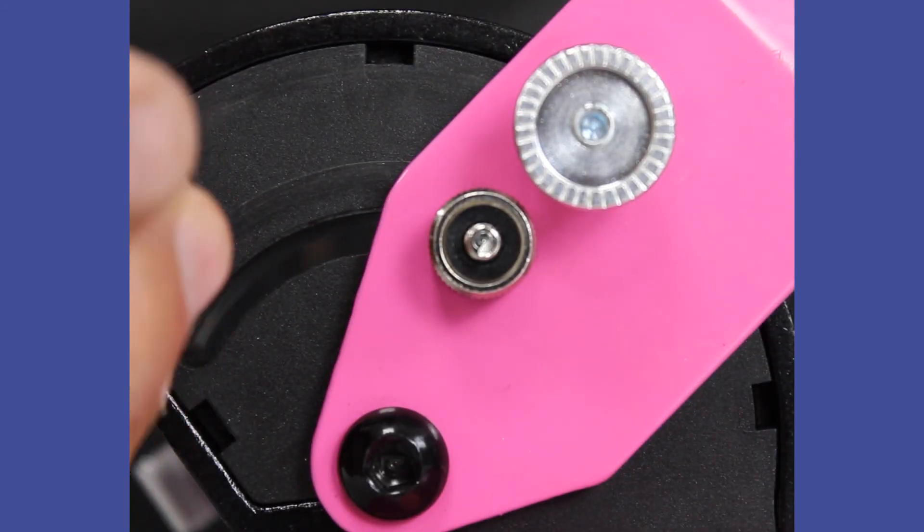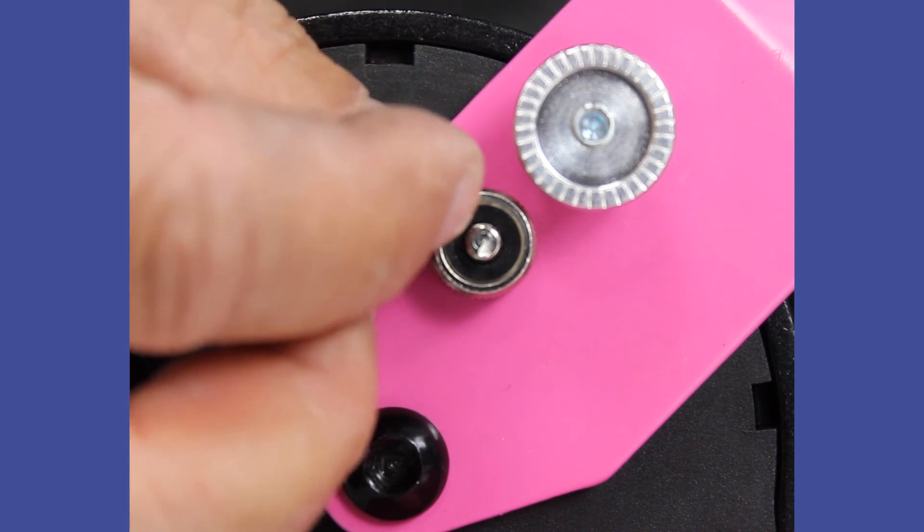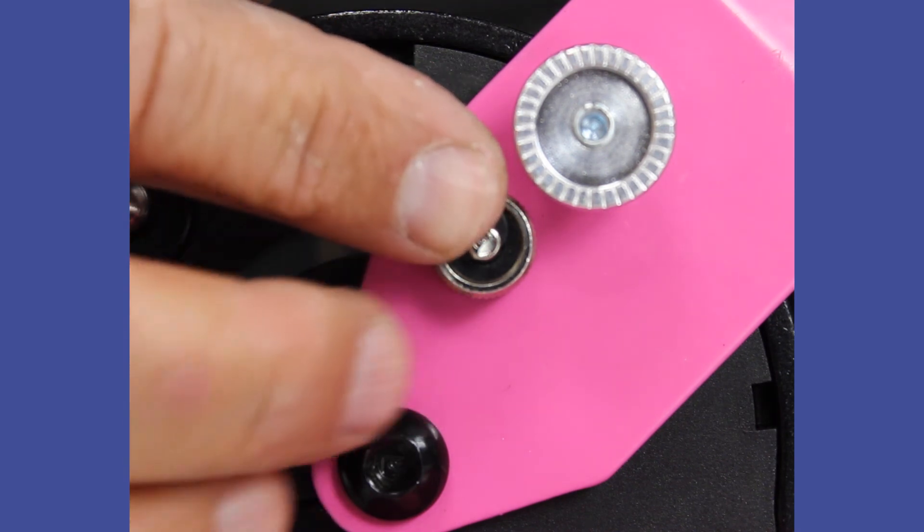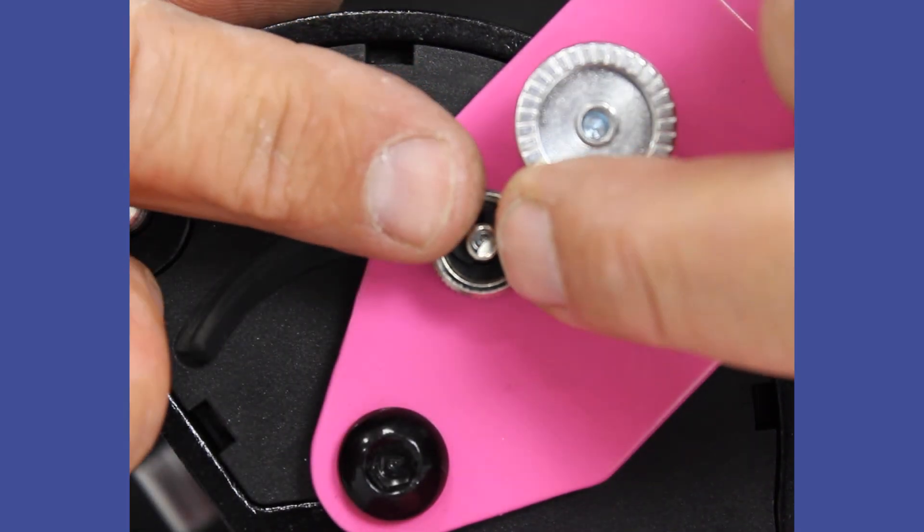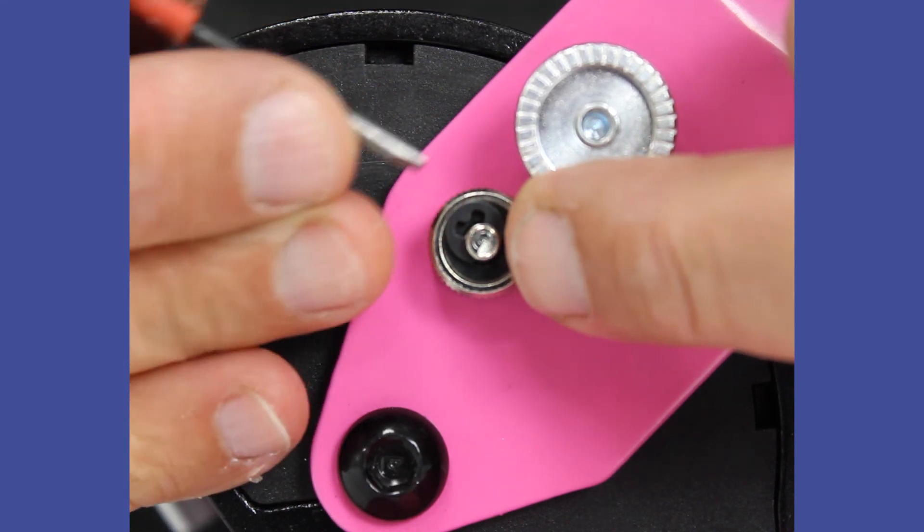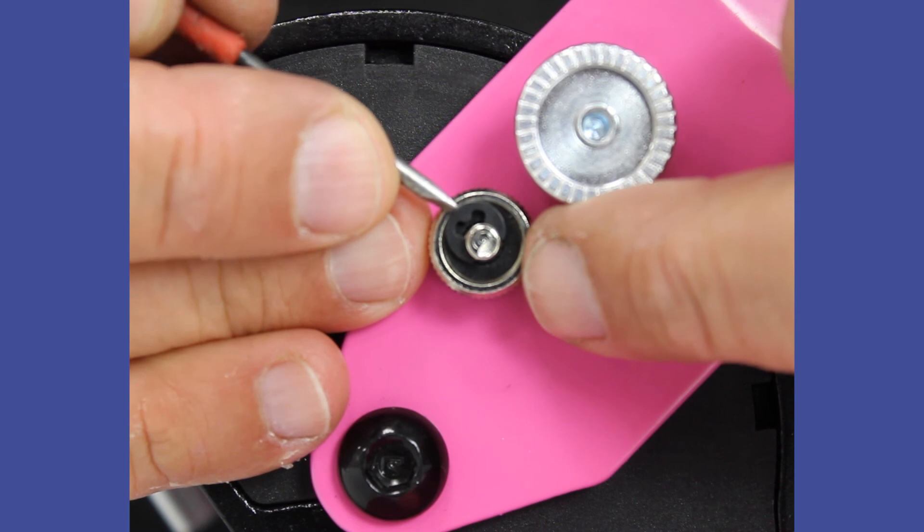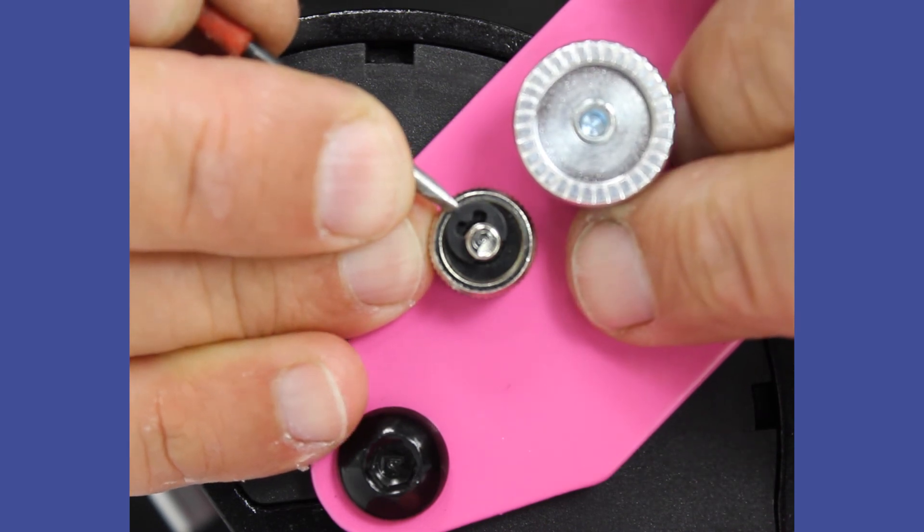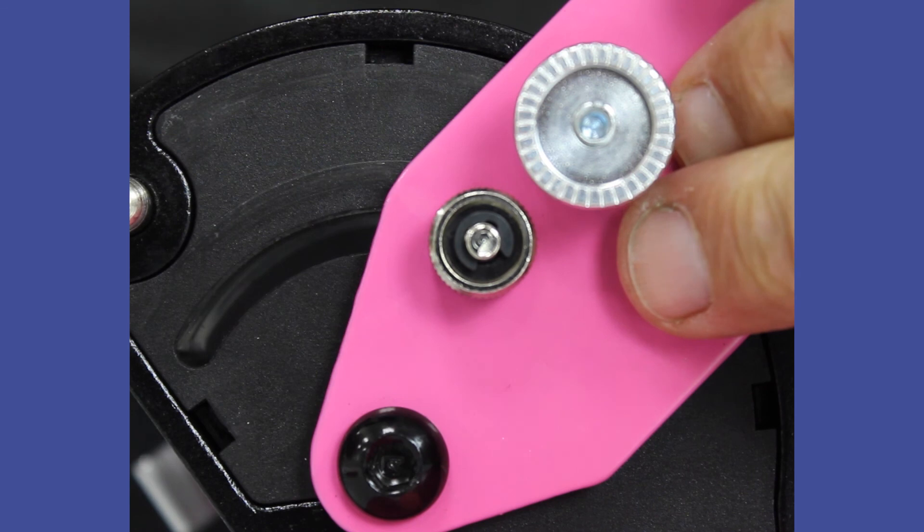So I've got the little C-clip here. And what I'm going to do, it's going to be a bit fiddly, I'm just going to sit it on top of the recess. And then with a little screwdriver, I'm just going to push down on the end of the C-clip, and you'll feel a positive click. There we go, that's clicked on.